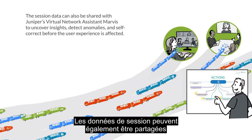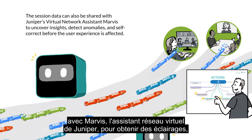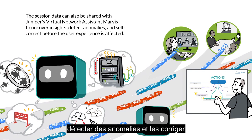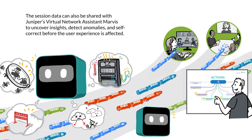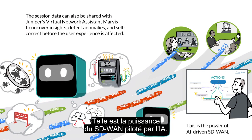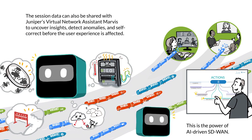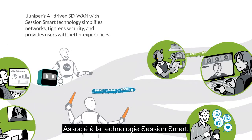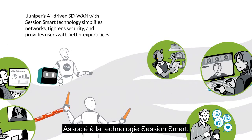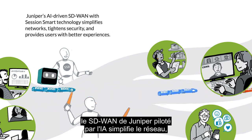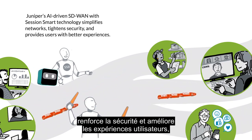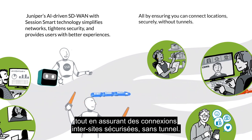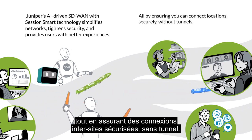The session data can also be shared with Juniper's virtual network assistant, Marvis, to uncover insights, detect anomalies, and self-correct before the user experience is affected. This is the power of AI-driven SD-WAN. Juniper's AI-Driven SD-WAN with Session Smart technology simplifies networks, tightens security, and provides users with better experiences — all by ensuring you can connect locations securely without tunnels.